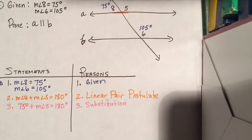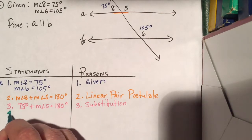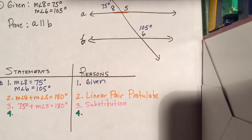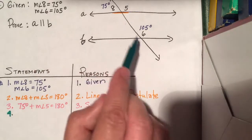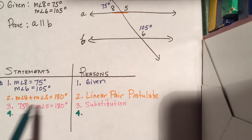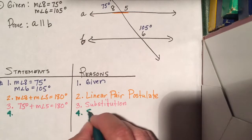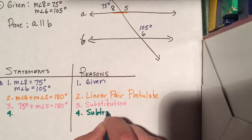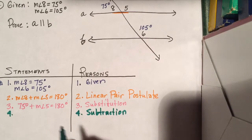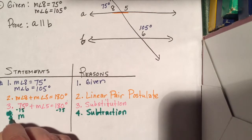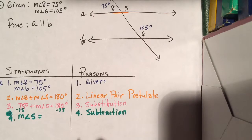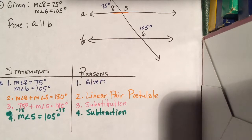Now let's move on to step 4. I know that I'm trying to establish that 5 and 6 are the same. I've created a situation where I can solve for 5. How do I get the measure of angle 5 all by itself? I'm going to use the subtraction property — I'm going to subtract 75 from both sides, just like algebra. And I'm left with the measure of angle 5 equals 105 degrees, and that's by the subtraction property. I subtracted the same value from each side — that's one of our algebra properties.